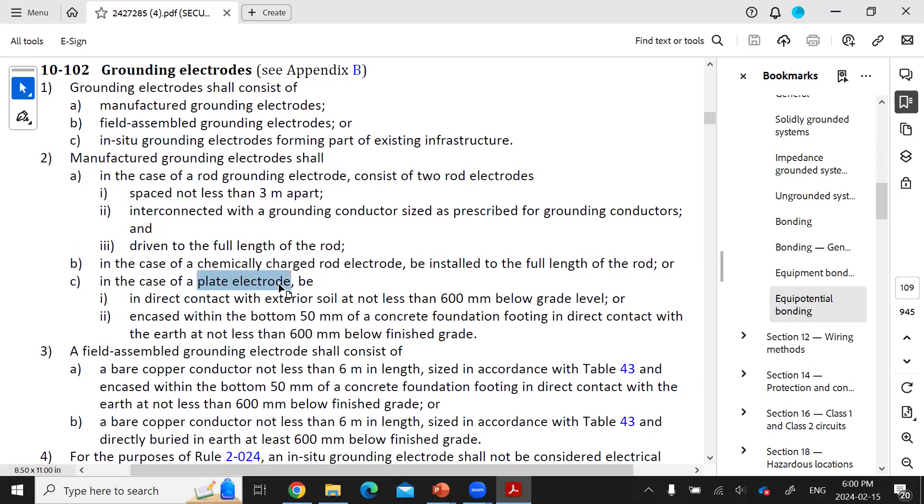The electrodes must have an exterior surface area of at least 0.2 meters squared, and all of that is in contact with soil. They must be buried at least 600 millimeters below surface grade. They must be encased within the bottom of a 50 millimeter concrete foundation footing that is in direct contact with the earth, with the concrete having an exterior surface of at least 0.4 meters squared and the burial depth no longer than 600 meters below finished grade.